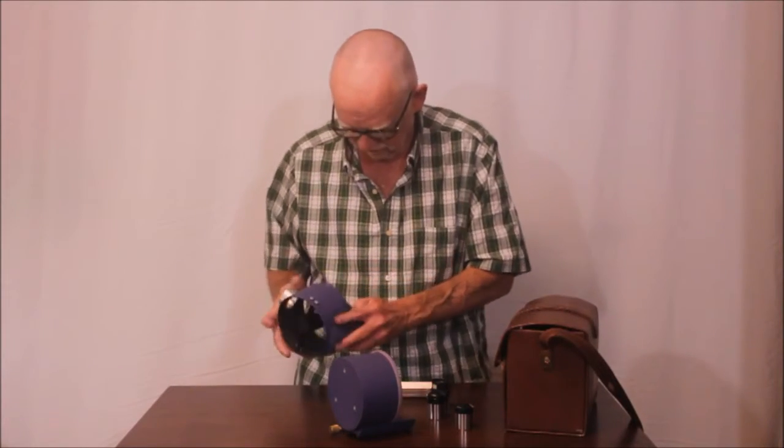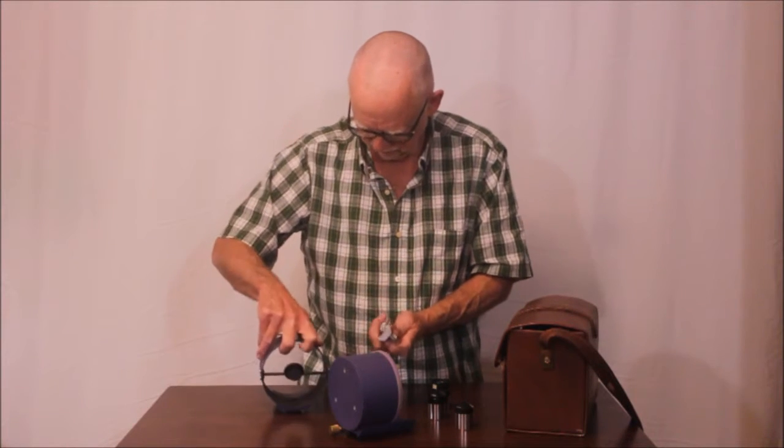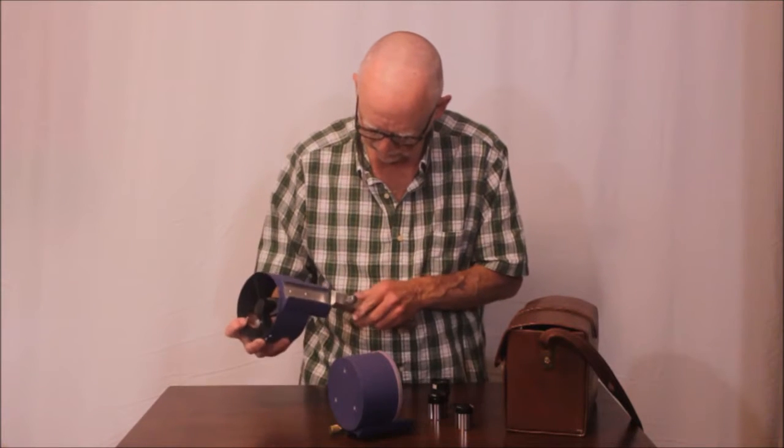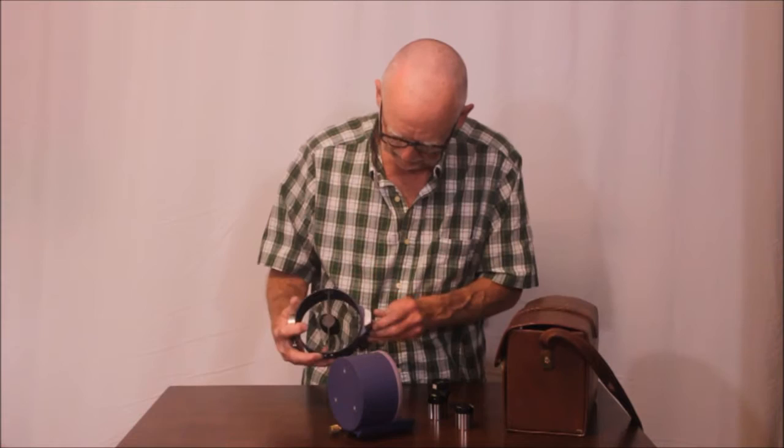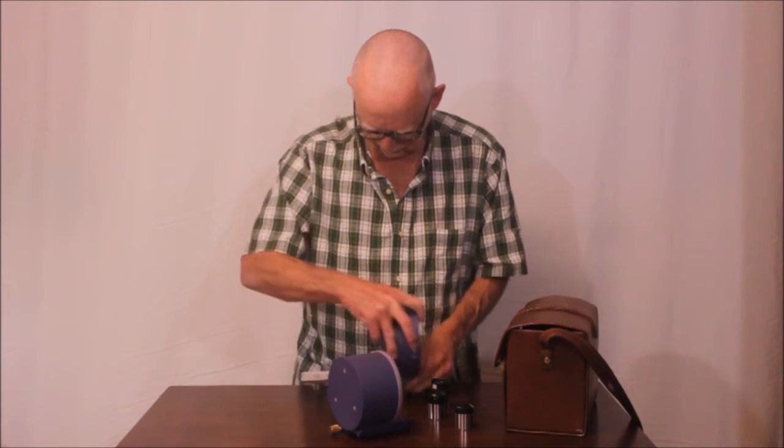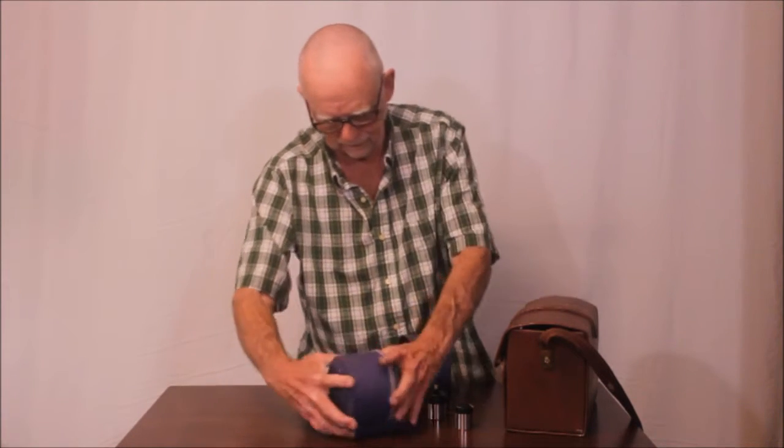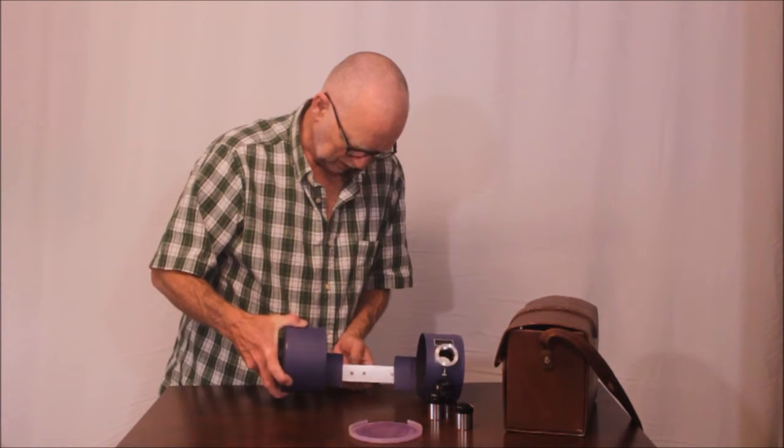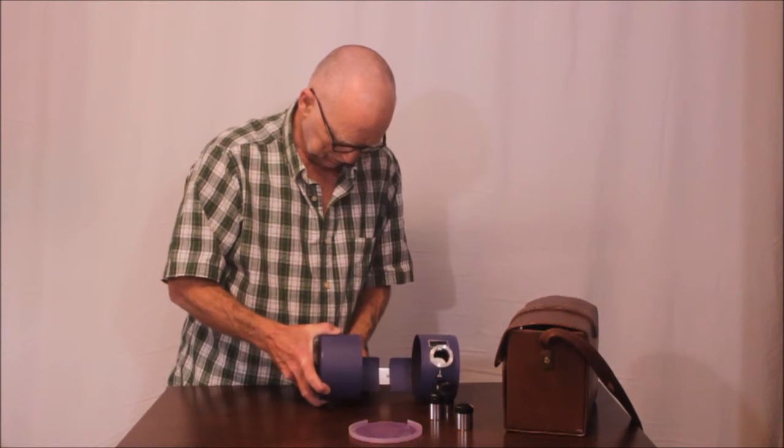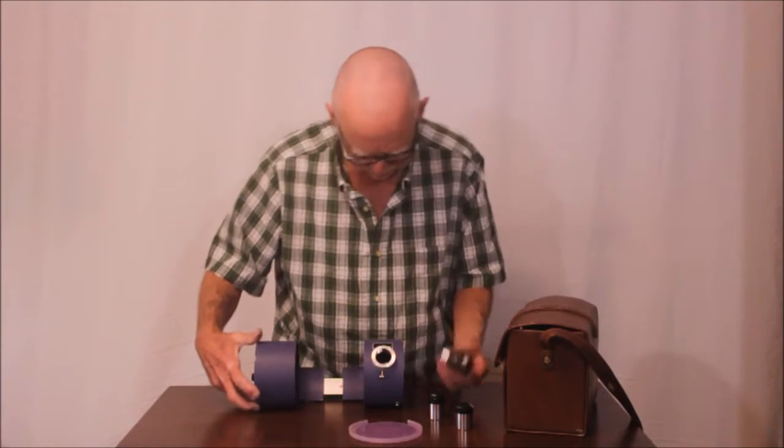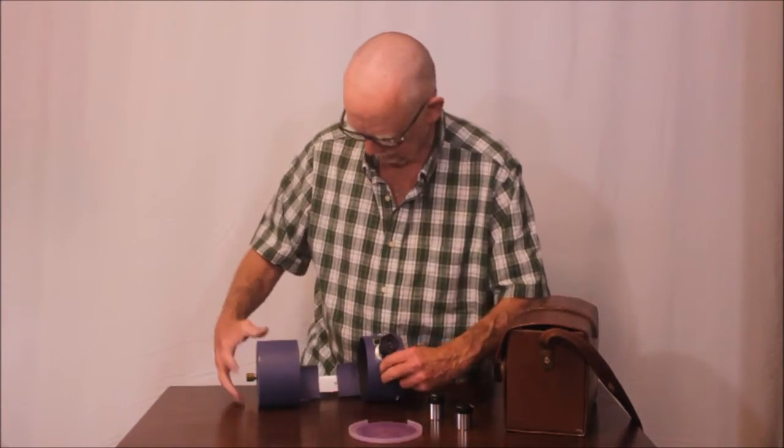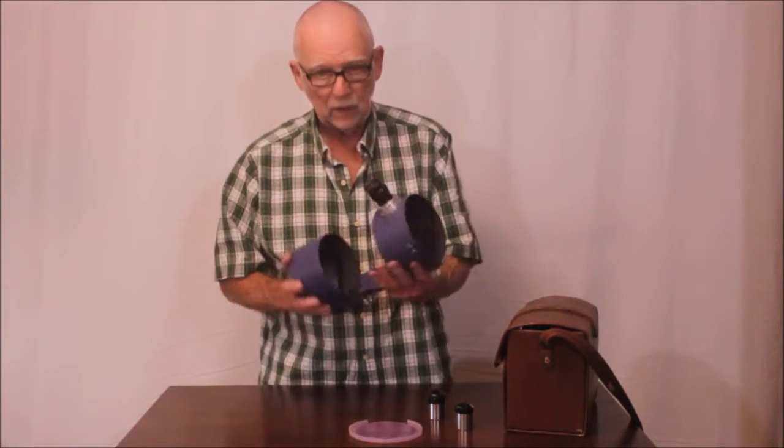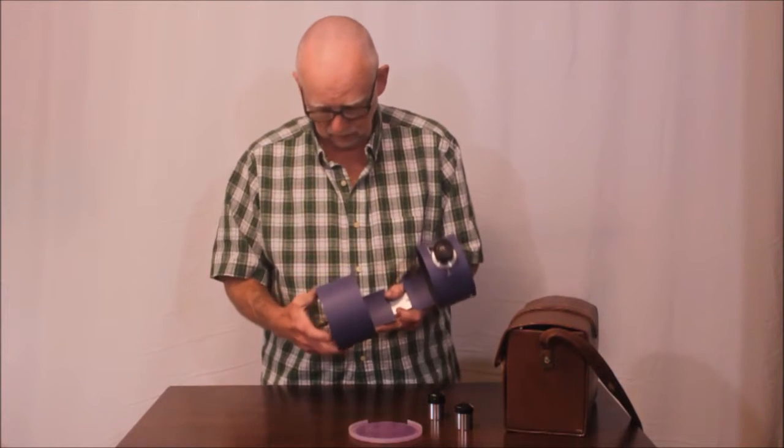Now this is fairly primitive, but workable. This slides on like that. This is a coffee can lid. This goes in about here. That goes in there. Pretty much, there's a telescope. Now there's a few little considerations here.